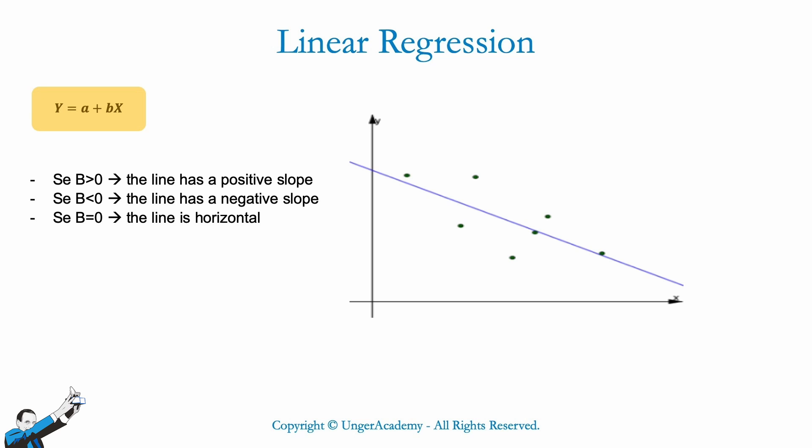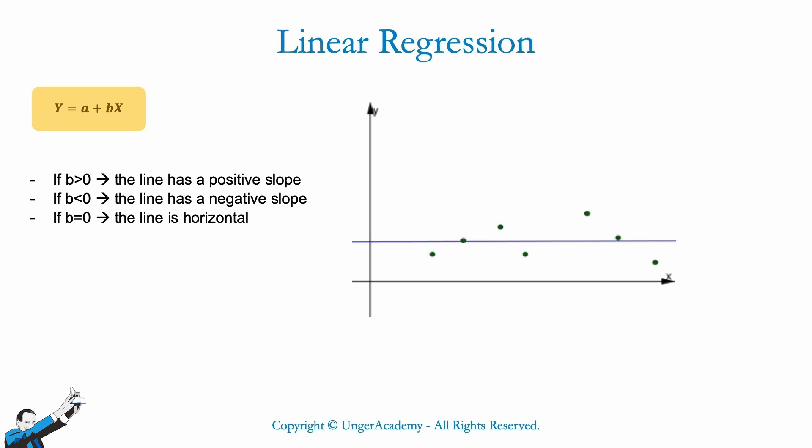If b is less than 0, we'll have a line with a negative slope, while if b is equal to 0, we'll have a perfectly horizontal line.